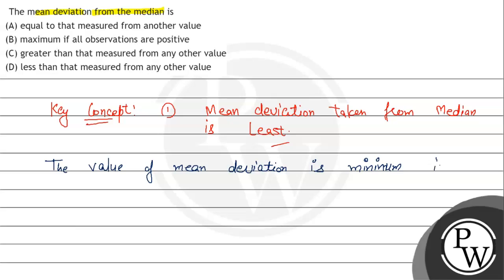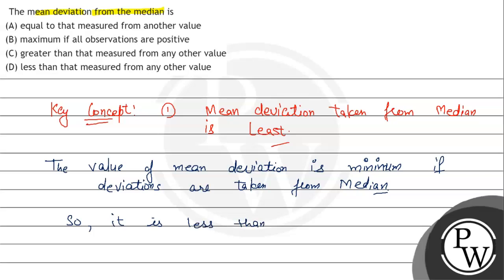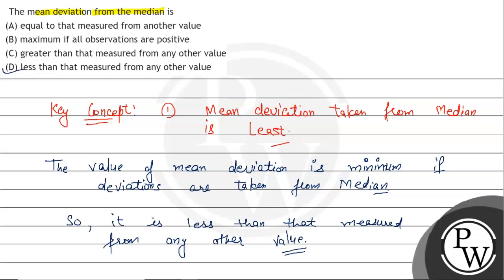If deviations are taken from median, so now from here we can clearly say that it is less than that measured from any other value. So the final answer from given options is option D: less than that measured from any other value. I hope you all understand it well. Best of luck.